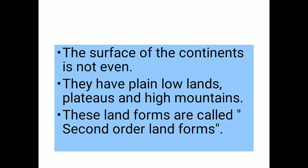The surface of the continents is not even. They have plain lowlands, plateaus, and high mountains. These landforms are called second order landforms. After the formation of the oceans and continents, different types of landforms were formed upon the continents — like plains, plateaus, and mountains. Since these were formed second, they are called second order landforms. So, second order landforms are plains, plateaus, and mountains; first order landforms are oceans and continents.